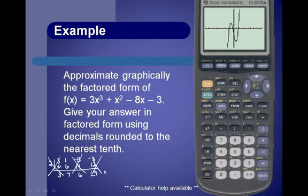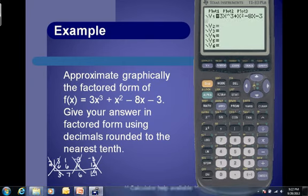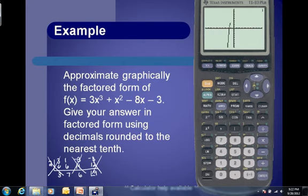Because we can't look at it and determine a nice, pretty number, we go back to y equals, enter y2 equals zero. When we graph it, y1 is the function and y2 equals zero is the x-axis, so we want to find where the x-axis and the function intersect.